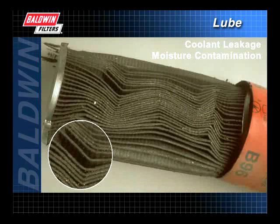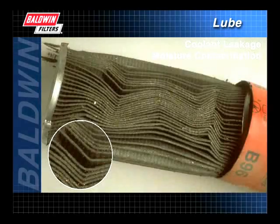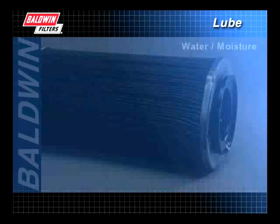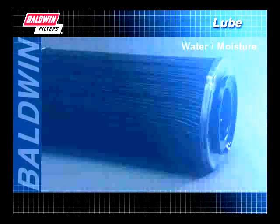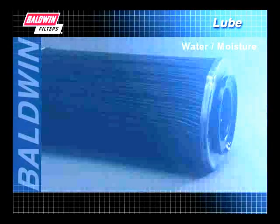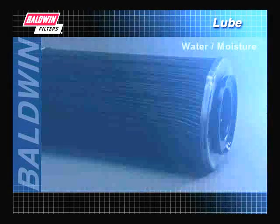Coolant leakage or moisture contamination will cause wavy pleats in the media and deterioration of the wrap. It may also cause a sticky, shiny, tightly held sludge on the filter media. A deteriorated outer wrap is another sign of moisture.